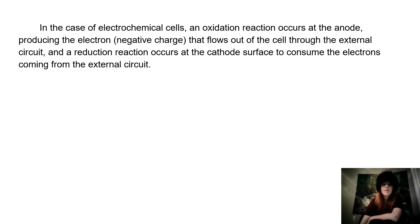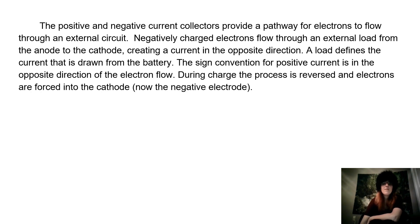In the case of electrochemical cells, an oxidation reaction occurs at the anode, producing the electron negative charge that flows out of the cell through the external circuit, and a reduction reaction occurs at the cathode surface to consume the electrons coming from the external circuit. The positive and negative current collectors provide a pathway for electrons to flow through an external circuit. Negatively charged electrons flow through an external load from the anode to the cathode, creating a current in the opposite direction.